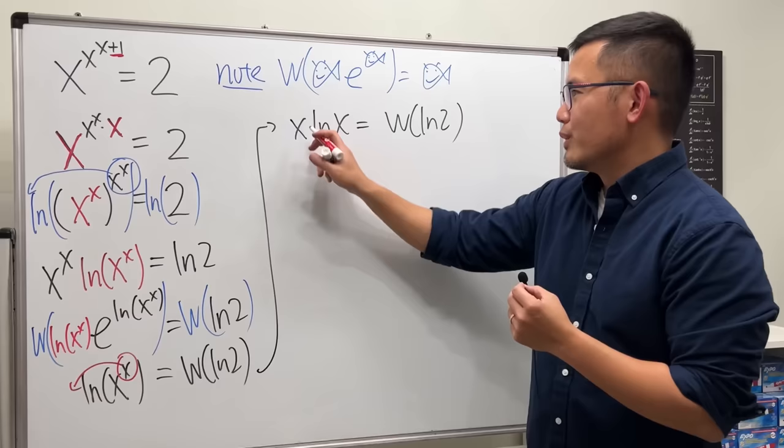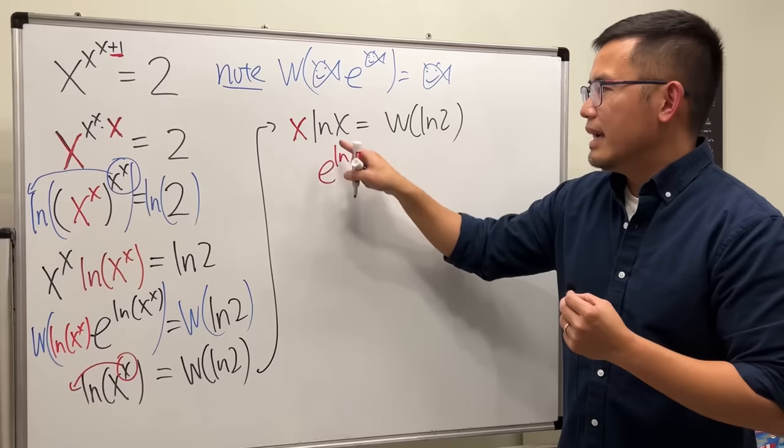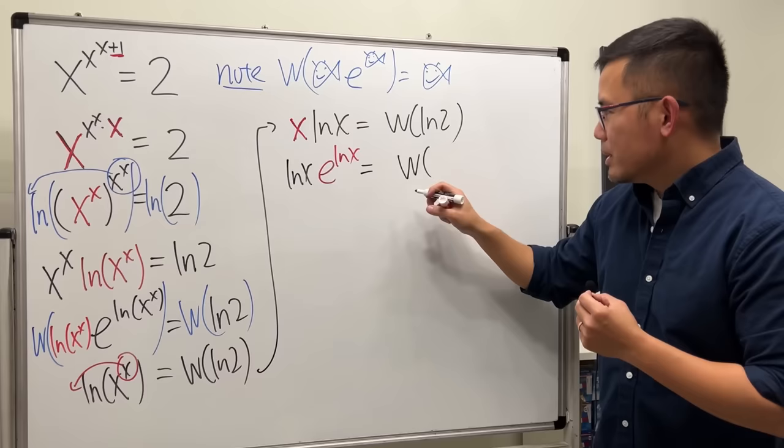Similar, right? Let's just go ahead, look at this x right here, and let's write this as e to the ln x power, and let's maintain this ln x, and that is equal to the Lambert W function of ln 2.